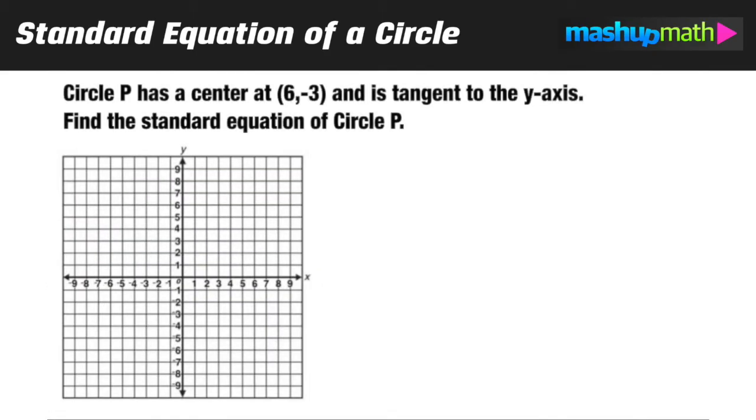For our final example we are given circle P with a center at (6,-3). We're also told that circle P is tangent to the y-axis and we want to find the standard equation of that circle. Let's create a diagram so we can visualize what's going on here. We have the center of the circle at (6,-3) and we know that it's tangent to the y-axis.